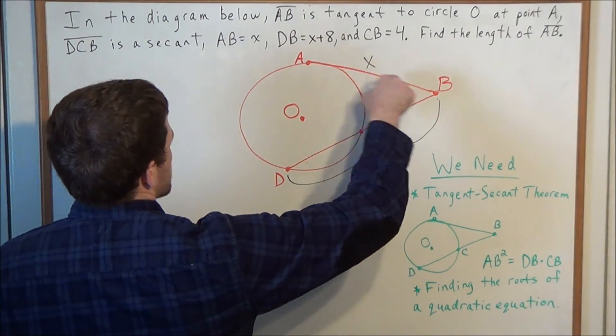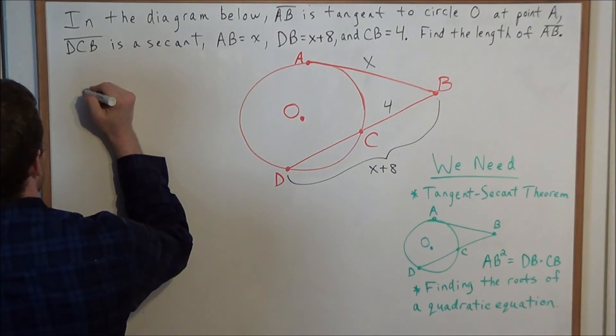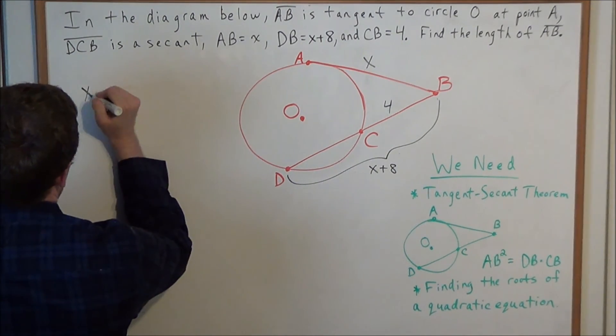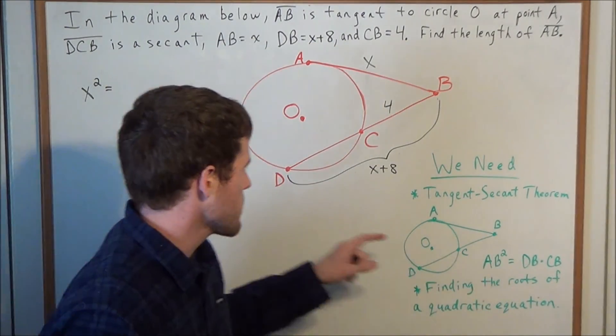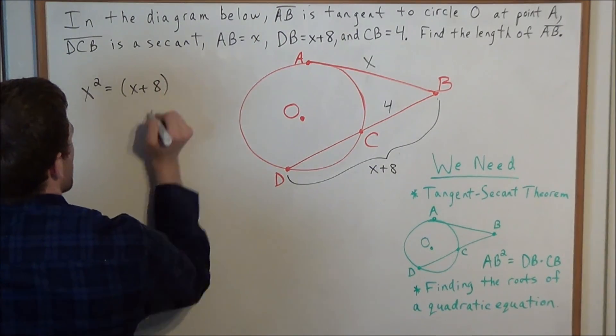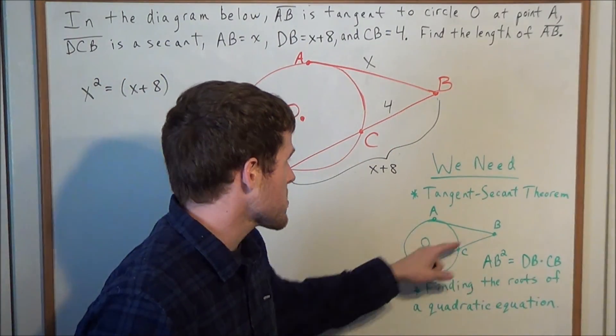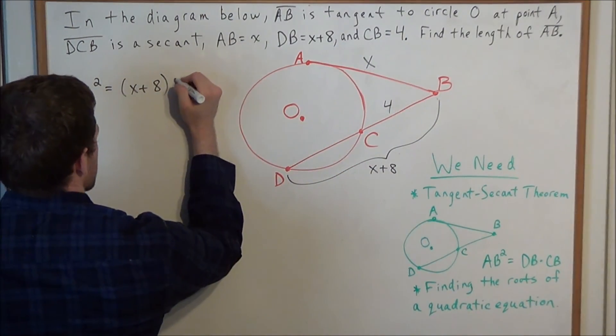The tangent segment, in this case the length of the tangent segment is equal to X, so we have X squared, so we're looking at X squared equals, and now the length of the secant segment, remember is X plus 8, so we have X squared equals X plus 8 times the length of the outer segment CB, in this case the length of CB is 4, so X plus 8 times 4.